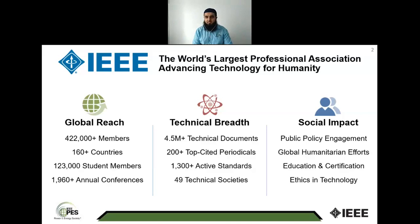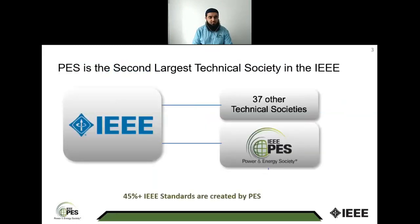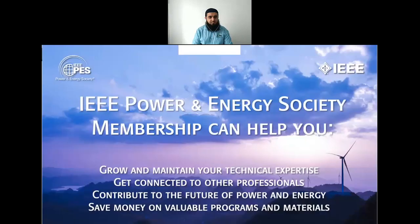We organize technical talks and we have 49 technical societies. We are focusing on humanity as well — humanitarian projects for technology. Under IEEE, other than Power and Energy Society, there are another 37 technical societies. PES is one of the oldest societies in IEEE and is the second largest technical society in IEEE. If you would like to become an IEEE member, you can discuss with me later on.